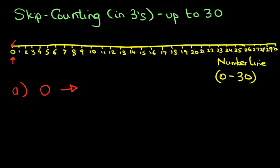So follow me on this. We go 1, 2, 3. 1, 2, 3. So we've taken three jumps. What number have we landed on? It is 3.